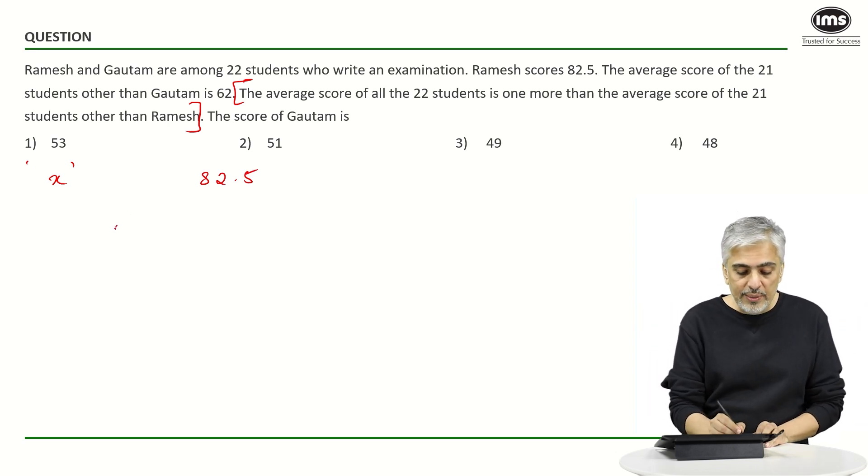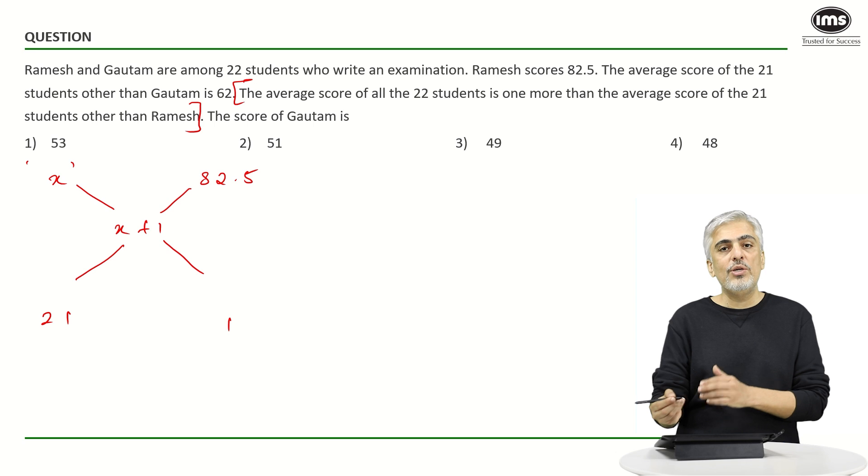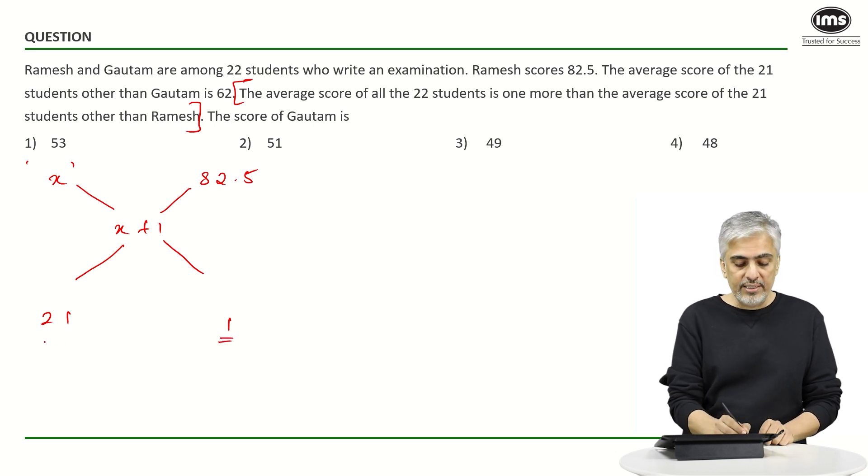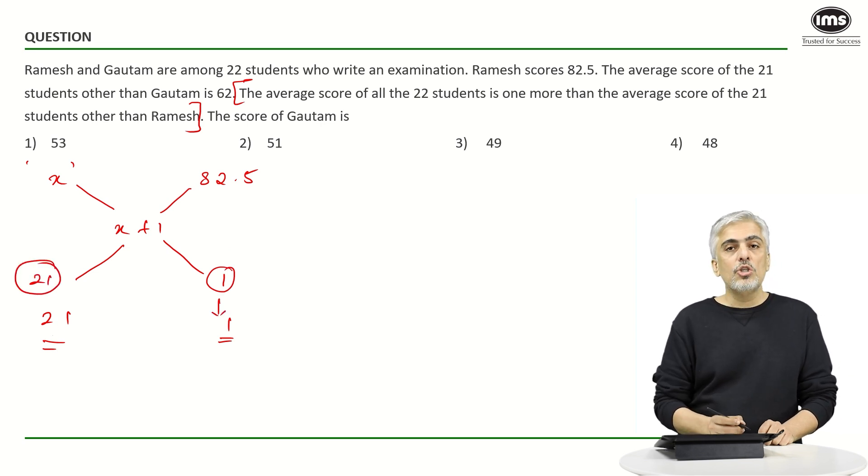The ratio is 1 is to 21. The ratio we know is 1 is to 21 because here there is only one child Ramesh and here there are 21 students. So if I subtract using allegation, x plus 1 minus x gives me 1. I don't need to subtract this. If 1 corresponds to 1, 21 will correspond to 21. So 82.5 minus x plus 1 is 21.